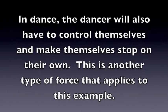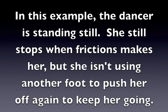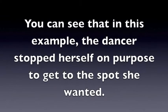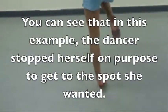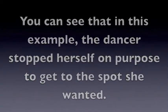In dance, the dancer will also have to control themselves and make themselves stop on their own. This is another type of force that applies to this example. In this example, the dancer is standing still. She still stops when friction makes her, but she isn't using another foot to push her off again to keep her going. You can see that in this example, the dancer stopped herself on purpose to get to the spot she wanted.